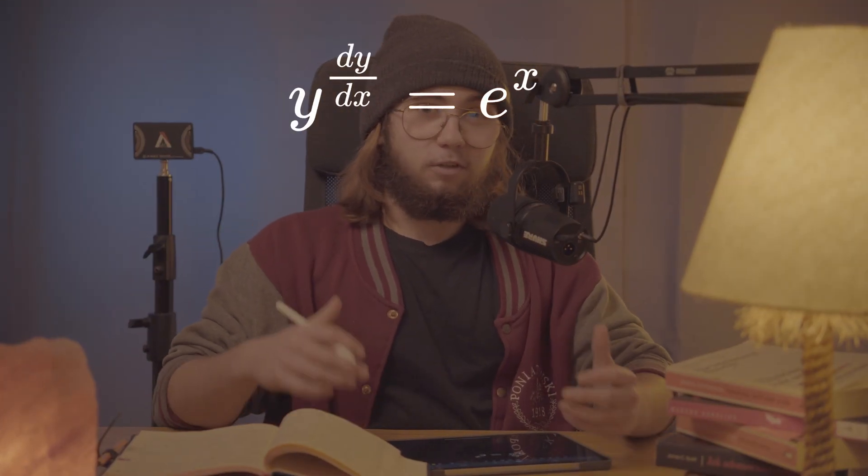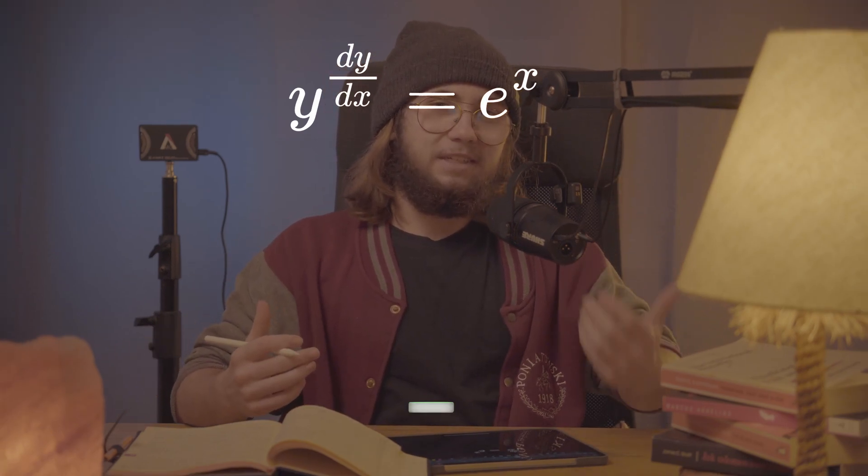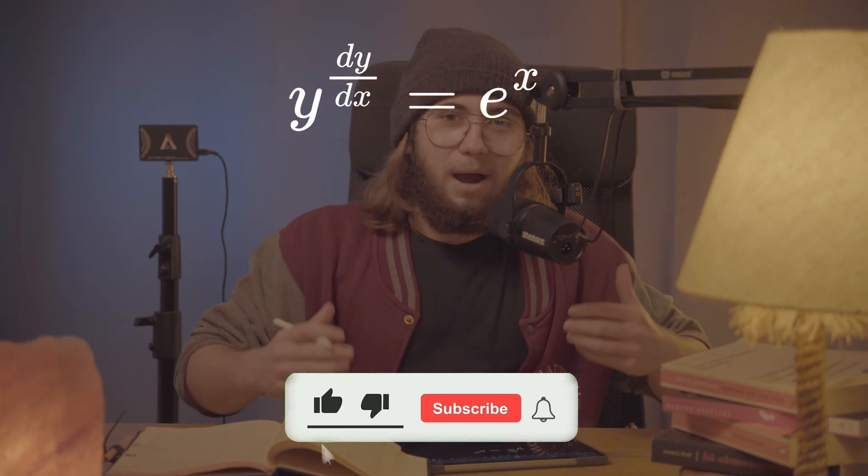We're supposed to find y such that y to the power of its derivative with respect to x is equal to e to the power of x. So how do we do it?